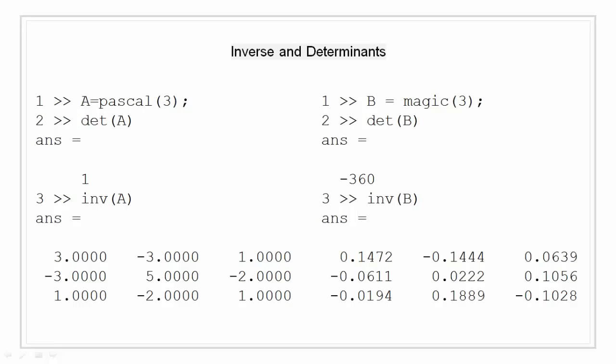On the left side, we see a symmetric matrix A equal to Pascal(3), a 3 by 3 matrix. We find the determinant by writing det(A) and we get the answer 1. Similarly, we find the inverse by passing A as an input argument and get the answer as a 3 by 3 matrix starting with 3, -3, 1, and so on. On the right side, I create a non-symmetric matrix B using the function magic with input argument 3, so it is a 3 by 3 non-symmetric matrix. The determinant for the same is found by passing matrix B to the function det, and I get an answer of -360. Similarly, the inverse is calculated by passing argument B to the function inv.